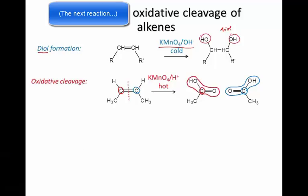So they're both carboxylic acids. In fact, an aldehyde is produced first, but potassium permanganate is such a strong oxidizing agent that it is essentially impossible to prevent the aldehyde from further reacting and becoming a carboxylic acid. If an aldehyde is required, there are variations on this reaction using different reagents where it's possible to stop the oxidation at an aldehyde, but we don't need to know those here.